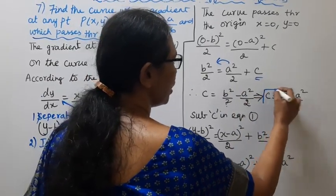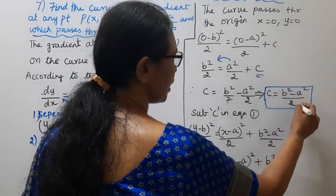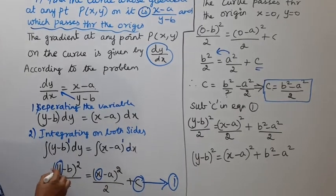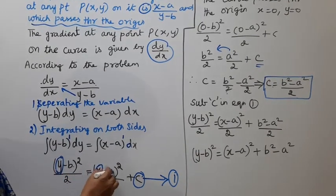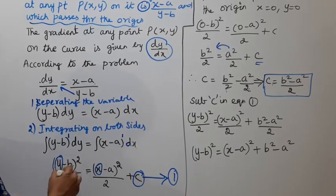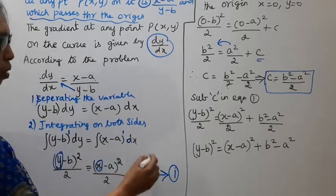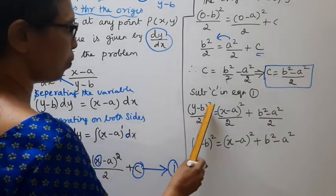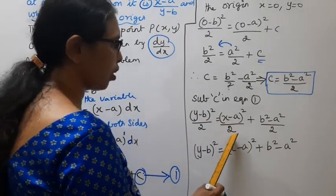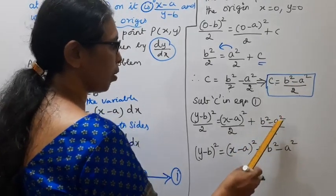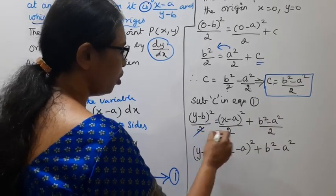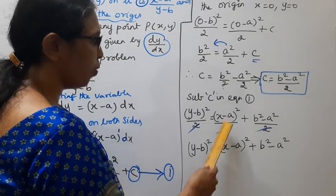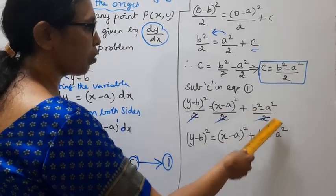So c equal to (b square minus a square) by 2. Substituting c back into the equation: (y-b) whole square by 2 equal to (x-a) whole square by 2 plus (b square minus a square) by 2. Multiplying both sides by 2 and cancelling: (y-b) whole square equal to (x-a) whole square plus b square minus a square.